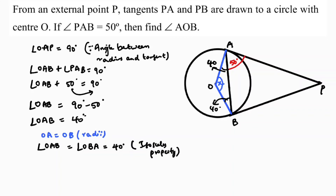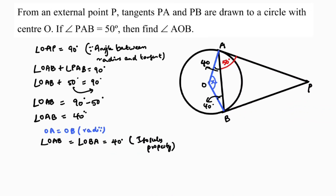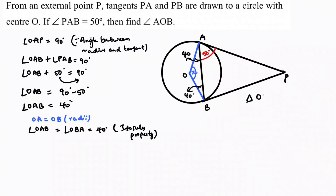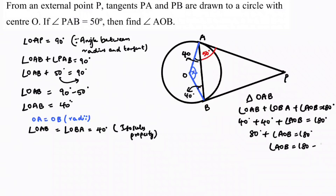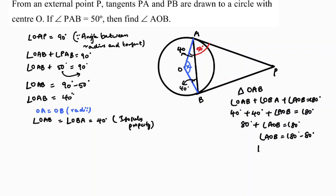So now, take triangle OAB. Angle OAB plus angle OBA plus angle AOB equals 180 degrees. So 40 degrees plus 40 degrees plus angle AOB equals 180. That gives 80 plus AOB equals 180, so angle AOB equals 180 minus 80. Therefore angle AOB is 100 degrees.